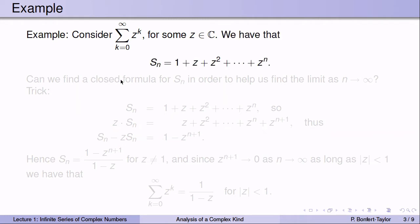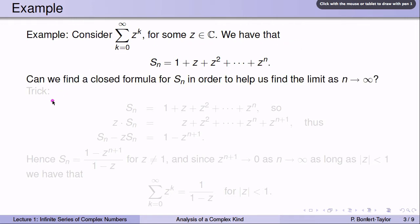The partial sums are given by simply adding from k equals 0 to n: 1 plus z plus z squared plus z cubed all the way to z to the n. Here's a great trick to find a closed formula in order to help us figure out whether these partial sums have a limit as n goes to infinity.